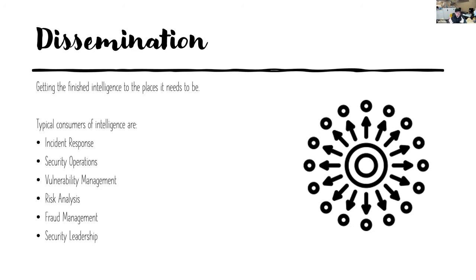We want to disseminate the information we've gathered and analysed. There are many stakeholders involved: incident responders, security operators, vulnerability management teams, governance risk and compliance teams, fraud management — particularly in banking and financial sectors. There's also security leadership, which disseminates information to the board and senior leadership to help influence how much money is invested in security and the critical controls that need to be put in place.